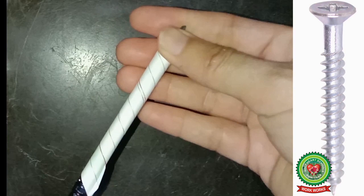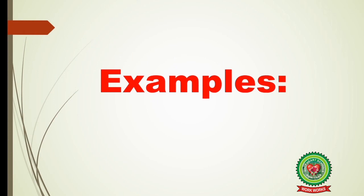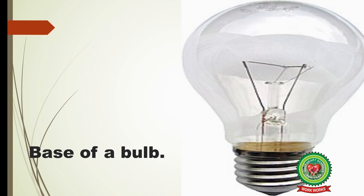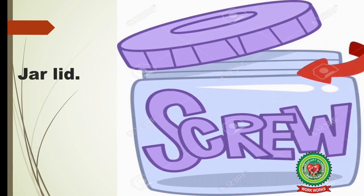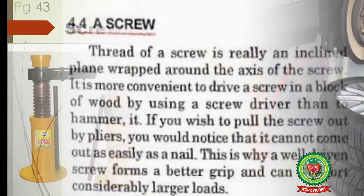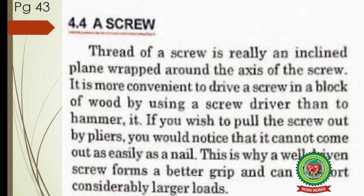Let's look at a few examples of a screw. The base of a light bulb is an example of a screw. Similarly, a jar lid and a screw jack are also examples of screws. A screw jack is a device used to lift cars or trucks while changing their tires — even a single person can lift a car using a screw jack.